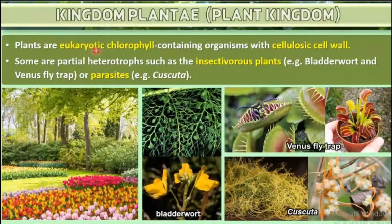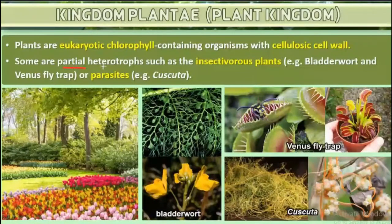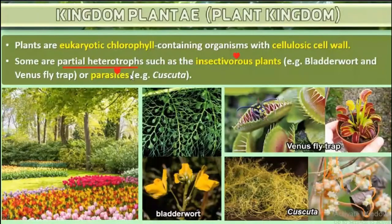Plants are eukaryotic, chlorophyll-containing organisms with a cellulosic cell wall. They possess chlorophyll in order to carry out photosynthesis. A few members are partially heterotrophic — some members are insectivorous plants, for example bladderwort and Venus flytrap.